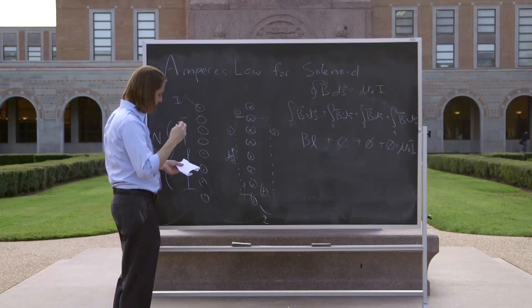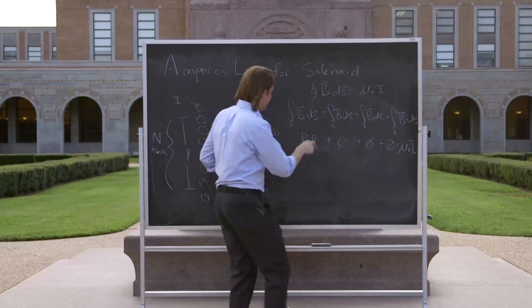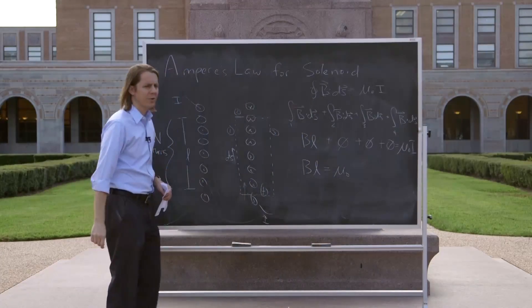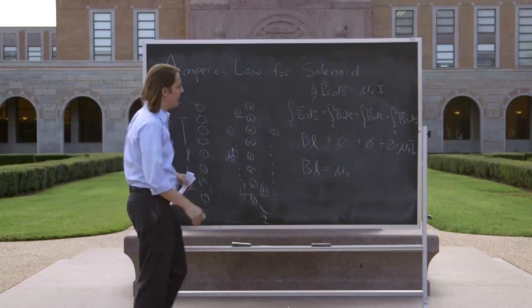So let's see. So let's say B L equals mu naught. But how much current is going through here? Oh, it's not just I.